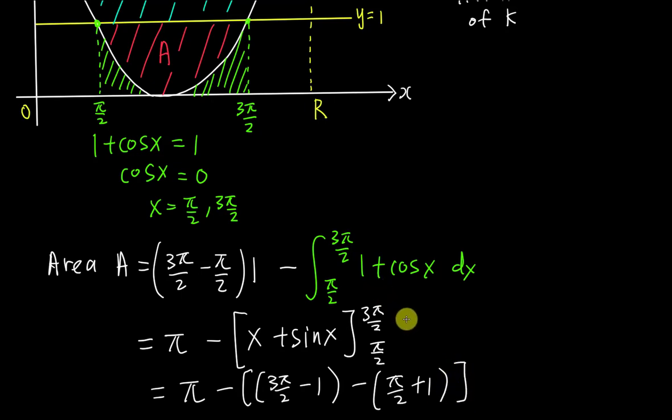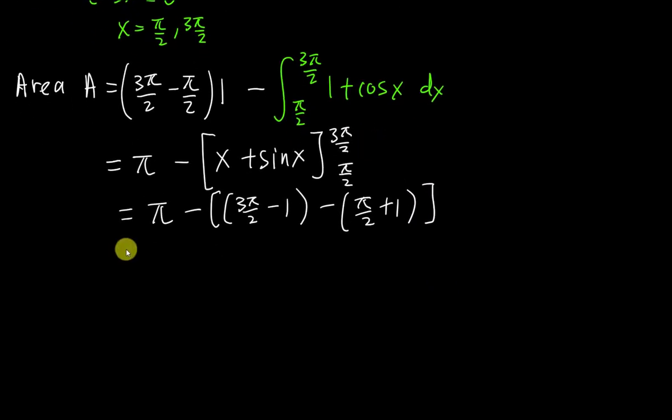If I sub 3π over 2 into x and sin x, I get 3π over 2 minus 1. Minus, if I sub π over 2 into x and sin x, I will get π over 2 plus 1. So by solving this, I know the area of A is 2 unit squared.